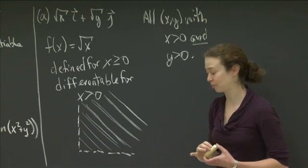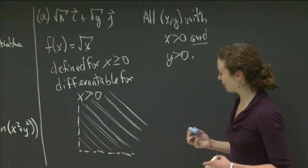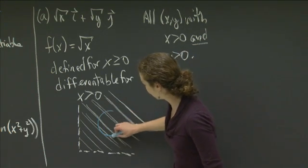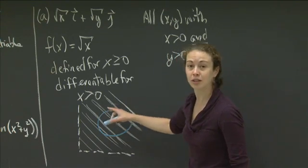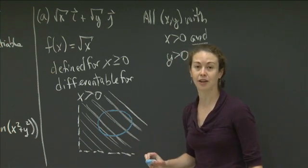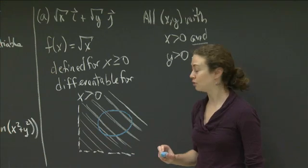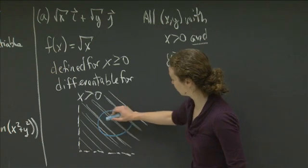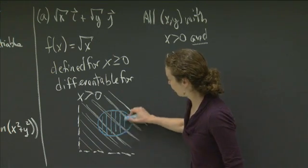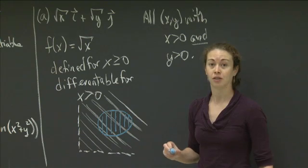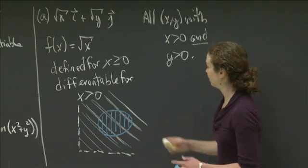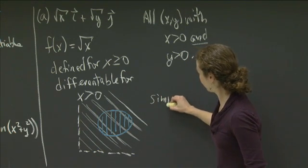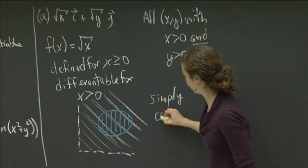Now the question is: is that region simply connected? The way we think about simply connectedness is that if you take a closed curve contained in the region, everything on the interior of that closed curve is also in the region. That is in fact true for this first quadrant — any closed curve drawn in the region has all interior points also in the region. So the domain where this vector field is defined and differentiable is simply connected.